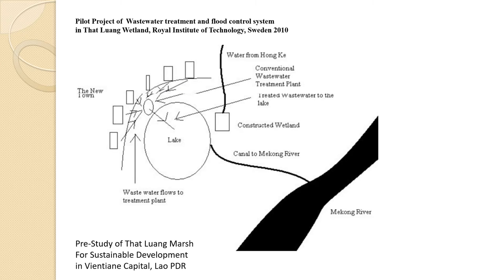This is another example — a very good project conducted in 2010 for wastewater treatment and flood control. However, this concept is no longer in use because the wetland area has been filled by residents living nearby. The concept was to collect all wastewater from the sub-wetlands, pass it into a treatment plant, flow into the lake, and then into a canal before reaching the Mekong River. It sounds like a good and very applicable concept, but it is already gone.